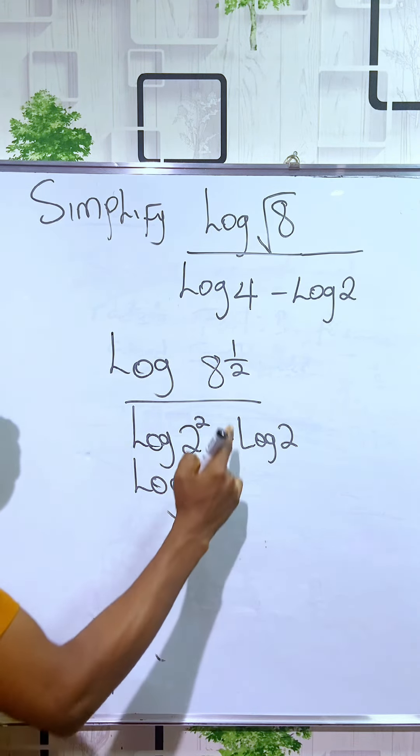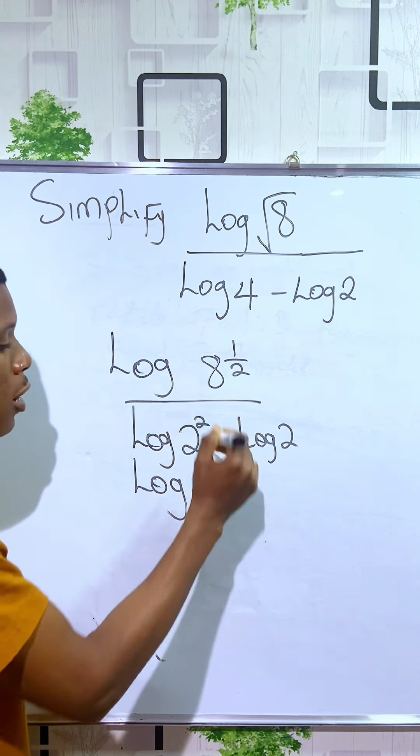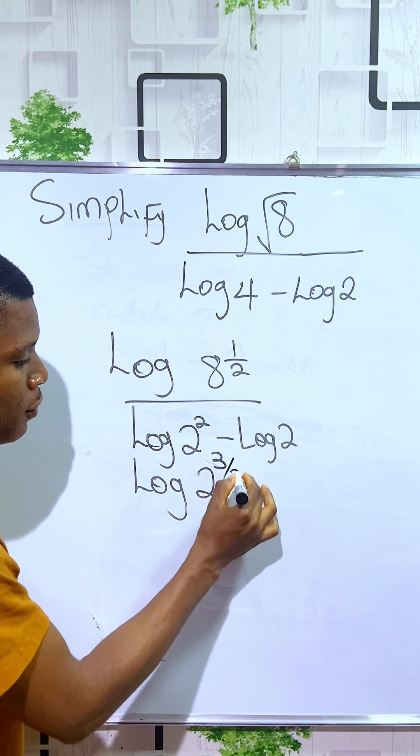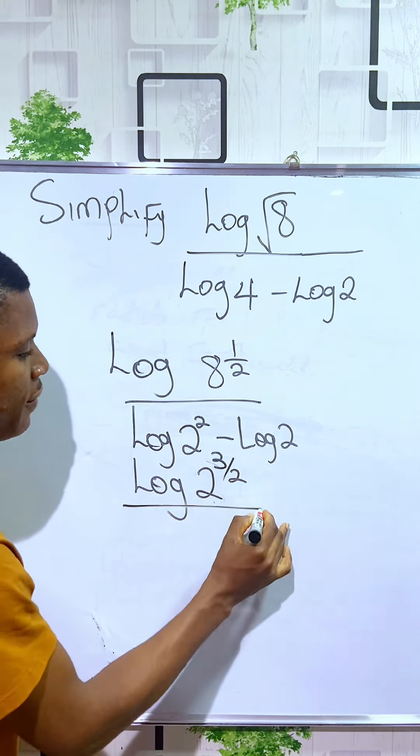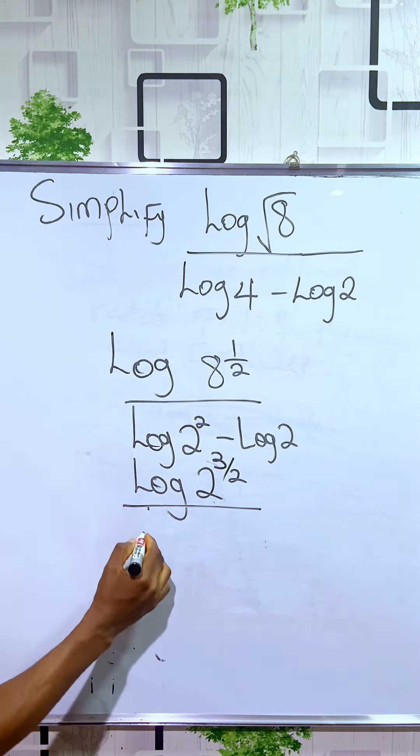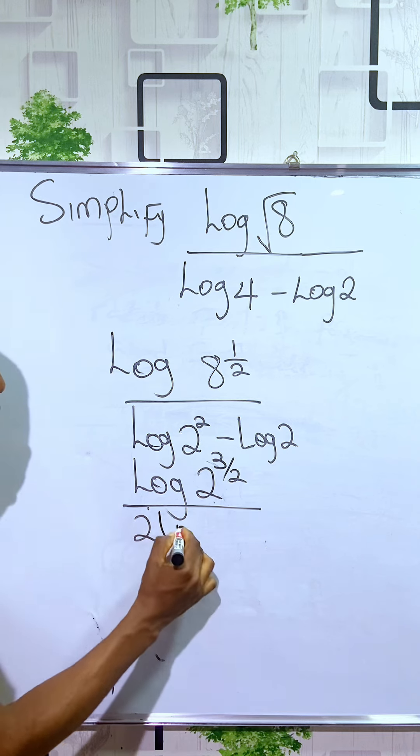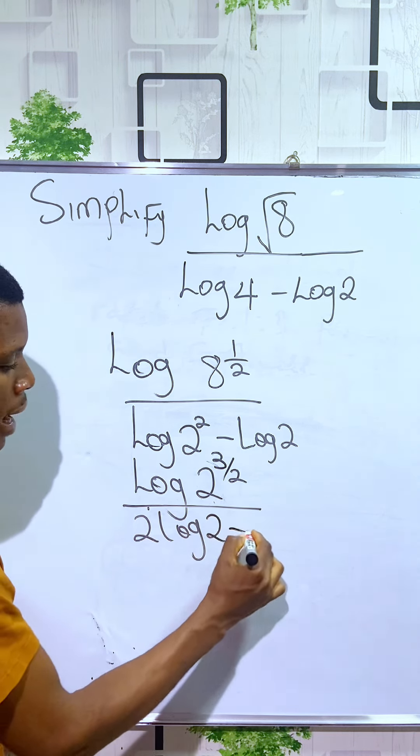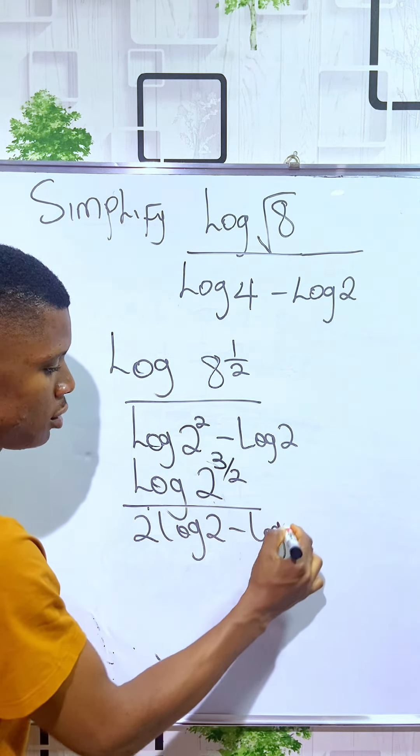You have it as 2 to the power of, this is 2 to the power of 3, and we have a half, we have 3 over 2, divided by, 2 can multiply the log, you have 2 log 2 minus log 2.